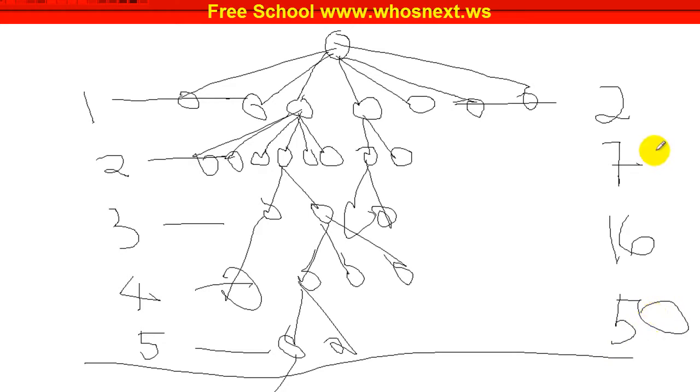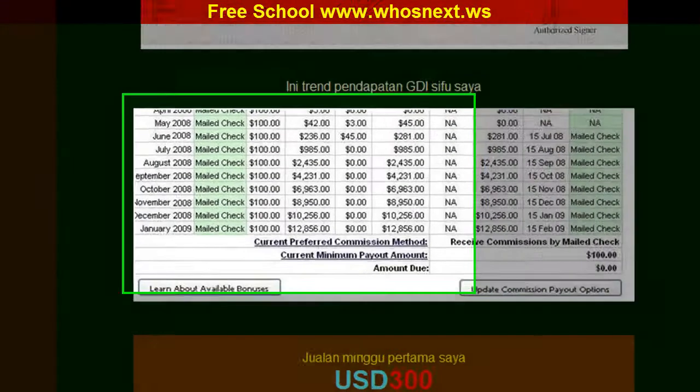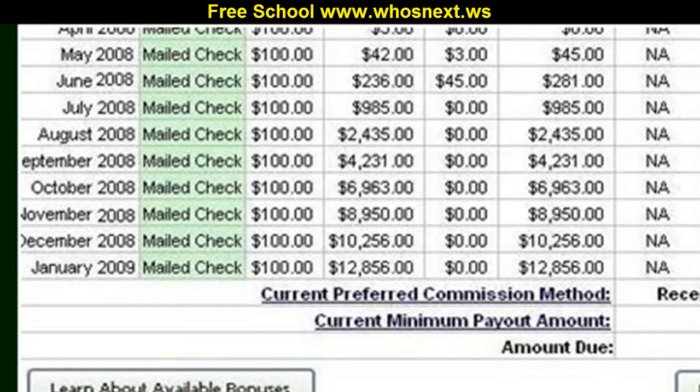In this affiliate program you'll notice once your network starts growing, usually the figure won't be less compared with the previous month, it keeps on increasing. This is one of the examples, one of our clicks, how he earned in GDI. In April 2008 he earned around three dollars, then May increased to 42, June 236, August kept on growing and growing. January 2009 he already earned almost thirteen thousand. Now he's not working, he's just earning from GDI.